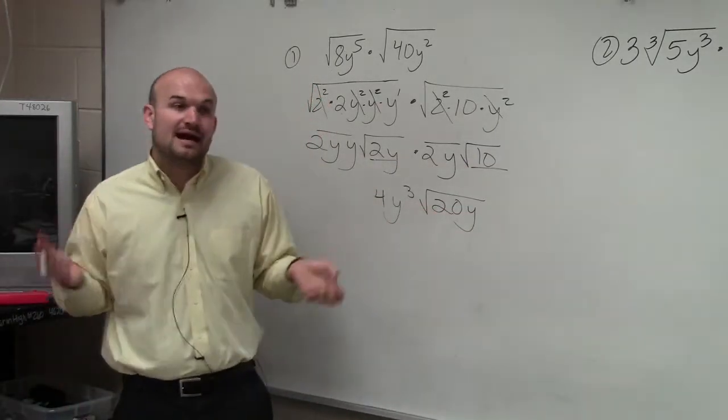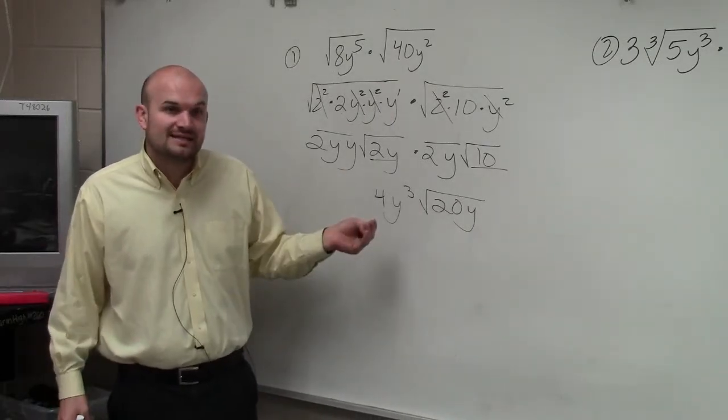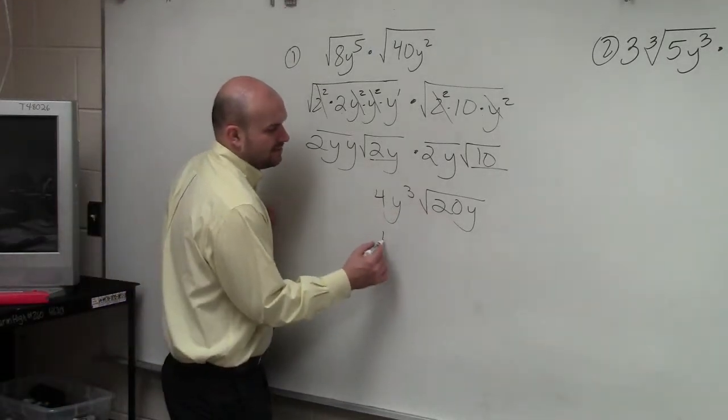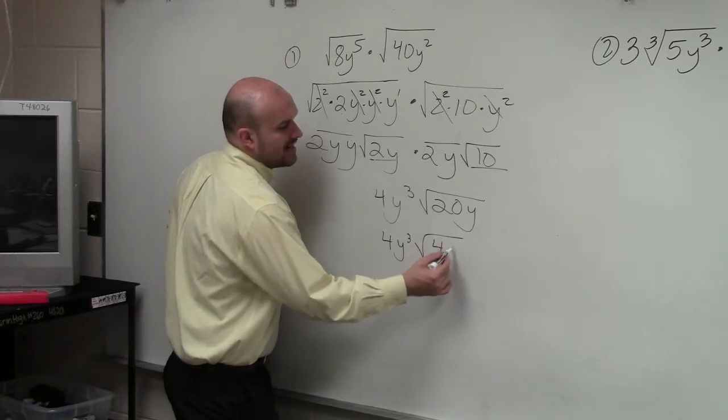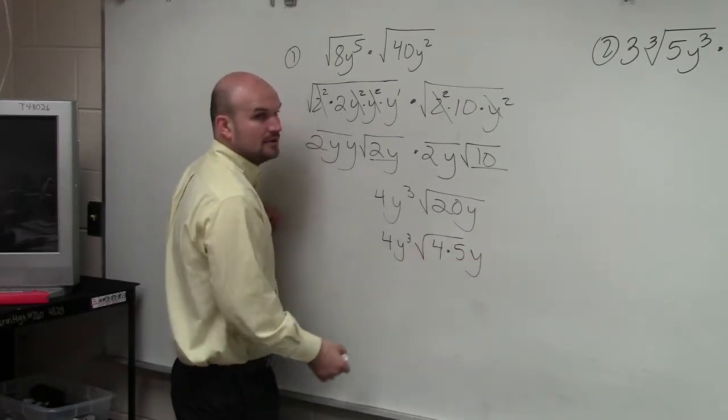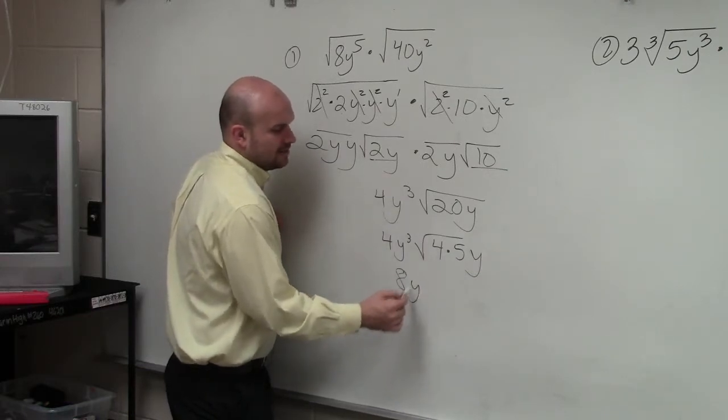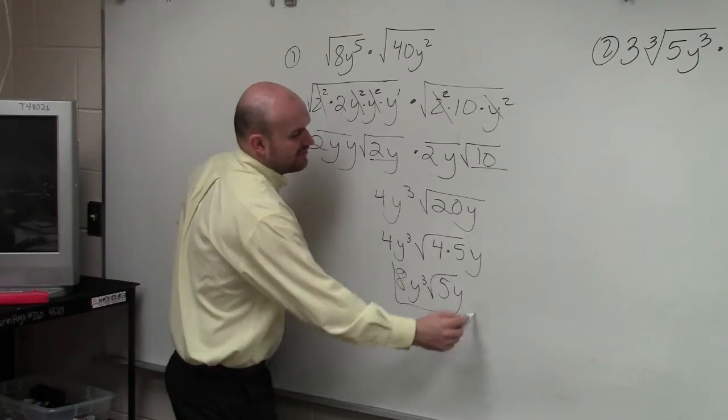Now, you might say, hey, I'm done here. However, I always want to look into simplifying these a little bit further. I can simplify the square root of 20 as the square root of 4 times 5. Where the square root of 4, again, is 2. 2 times 4 is 8. y cubed times the square root of 5y is going to be your final answer.